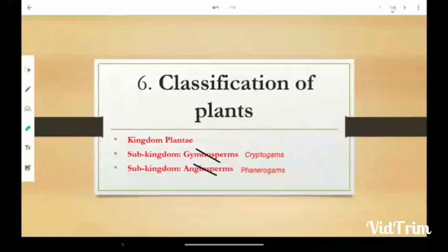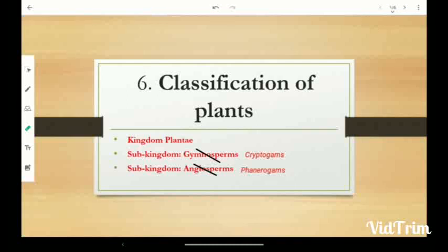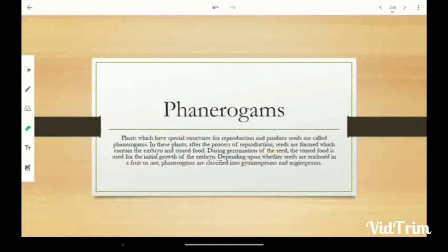Dear students, today we are going to study about Science and Technology, Part 2, Lesson Number 3: Classification of Plants. Last period we already studied about cryptogams. Cryptogam plants means their reproductive organs cannot be seen; all these plants reproduce by spore formation. Today we are going to study about the second sub-kingdom: Phanerogams.